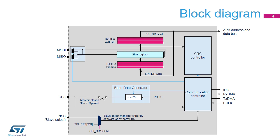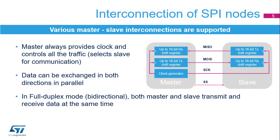The CRC value can be transmitted as the last bytes in transmit mode, and an automatic CRC error check is done on the last received bytes. The SPI master always controls the bus traffic and provides the clock signal to the dedicated slave through the SCK line.